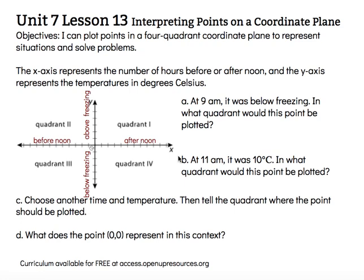At 9 a.m., it was below freezing. So 9 a.m. is before noon, I'm going to go left. And it was below freezing, so I'm going to go down — to the left and down. In what quadrant would this point be plotted? Both of those would be negative values, and that would be in quadrant 3.